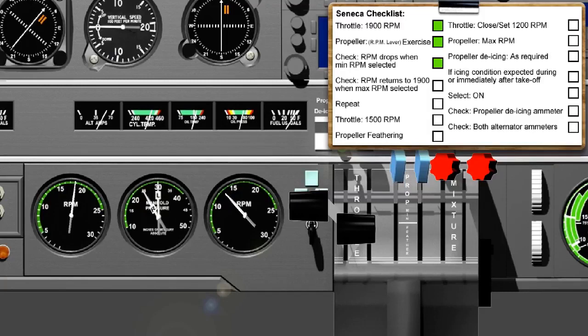Check, RPM drops when min RPM selected. Pull the propeller control lever to minimum and allow the RPM to decrease by 200. At this point, it's not necessary to wait until the RPM falls to the absolute lowest possible value. You're only checking for the correct functioning of the propeller control system.